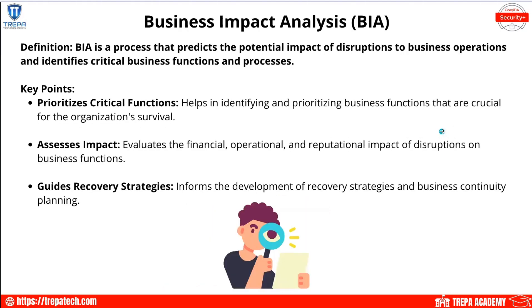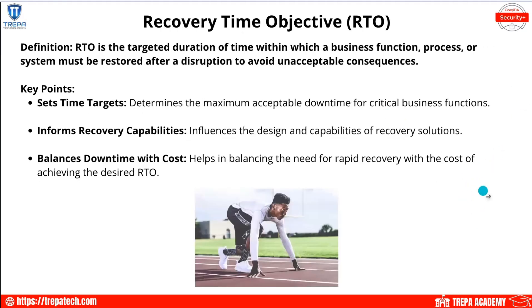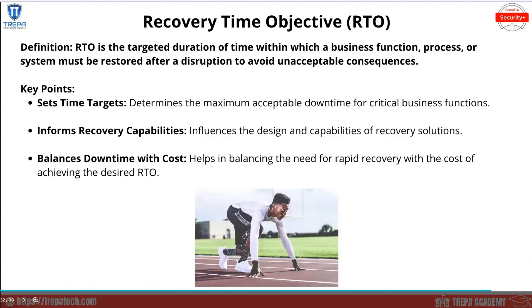Our business impact analysis, the BIA, is a process that predicts the potential impact of disruptions to business operations and identifies critical business functions and processes. The BIA prioritizes and assesses impact at a high level — it's going to use things like the ALE and SLE. This could be an overall document that says here's our list of the impacts to our business if X, Y, and Z risks get realized. Let's cover some other terms that are going to be essential for the exam.